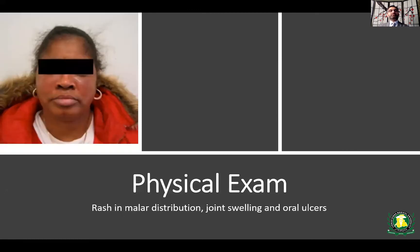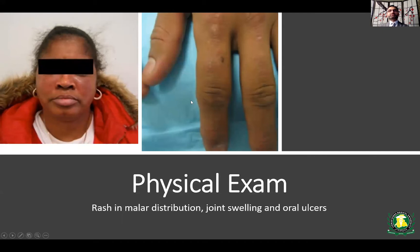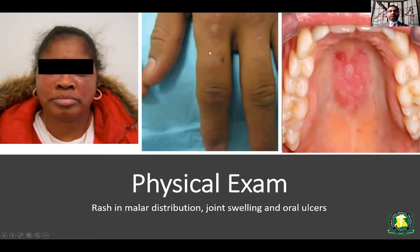On physical exam, you look at her face and see a reddened area on the malar part of the face. Interestingly, you notice that the nasolabial fold is spared by this rash. Looking at her hand, there is a little bit of swelling of her joints. And when you ask her to open her mouth, you see that there is a lesion in the roof — the hard palate — of the mouth.